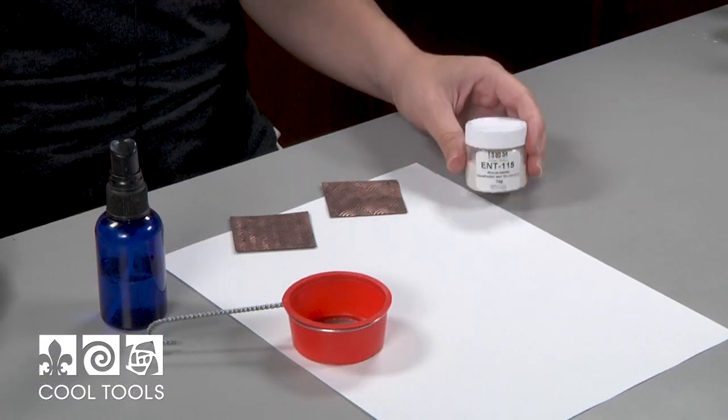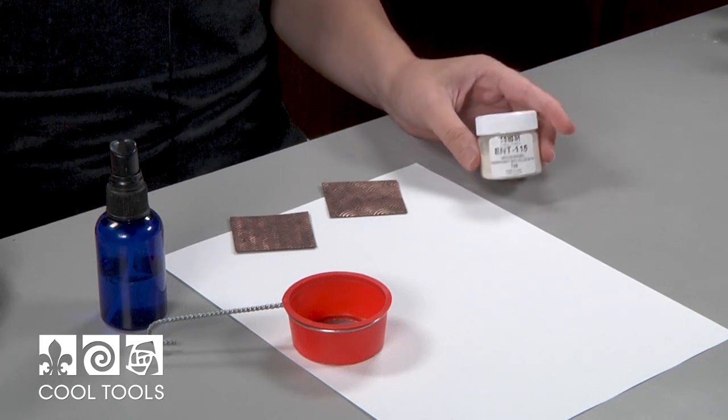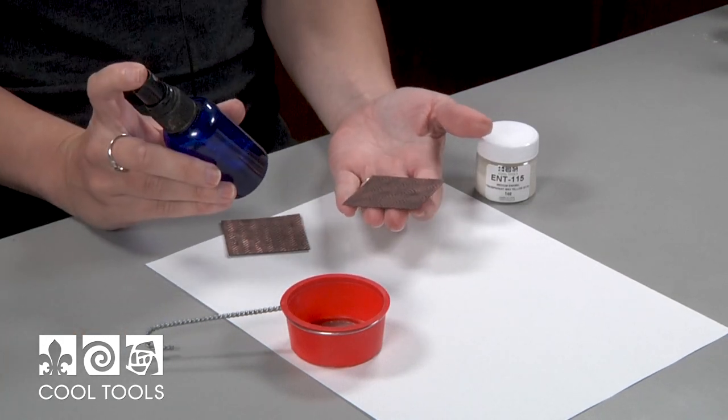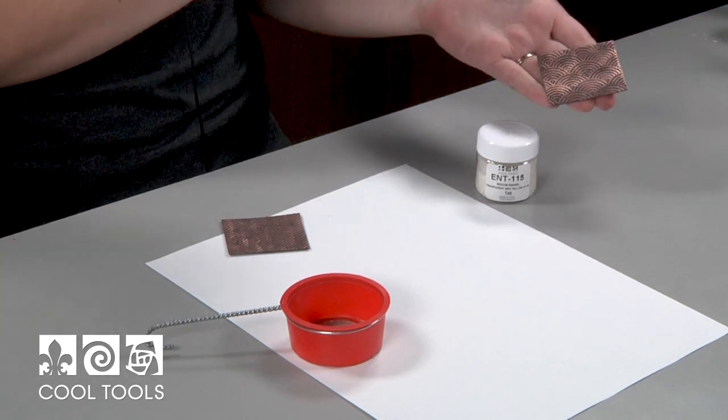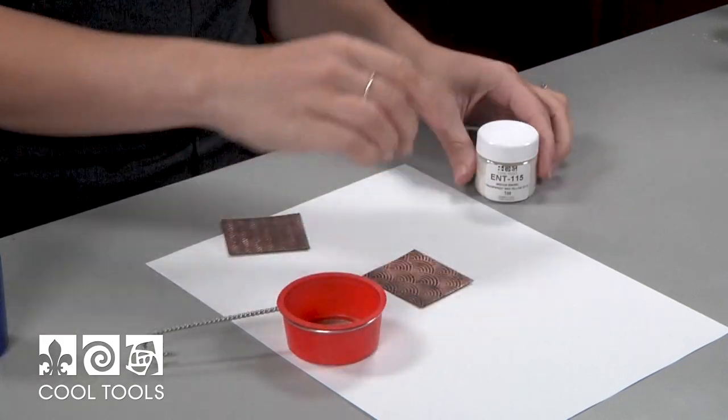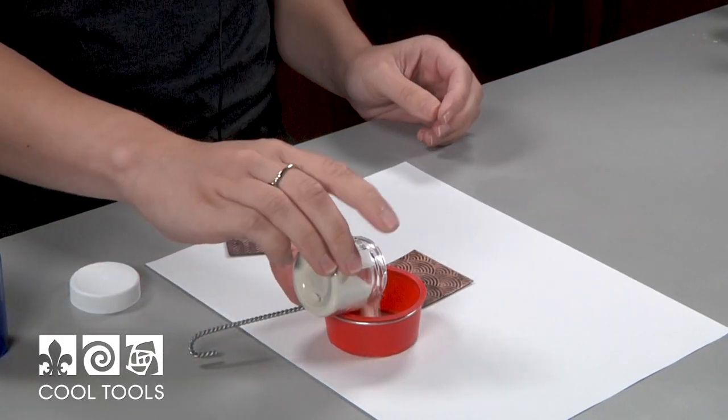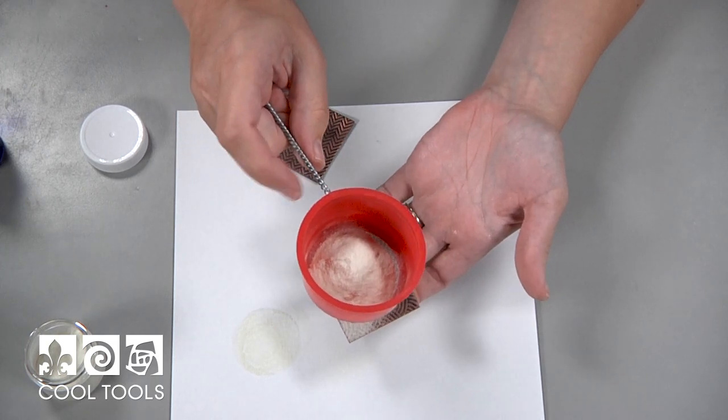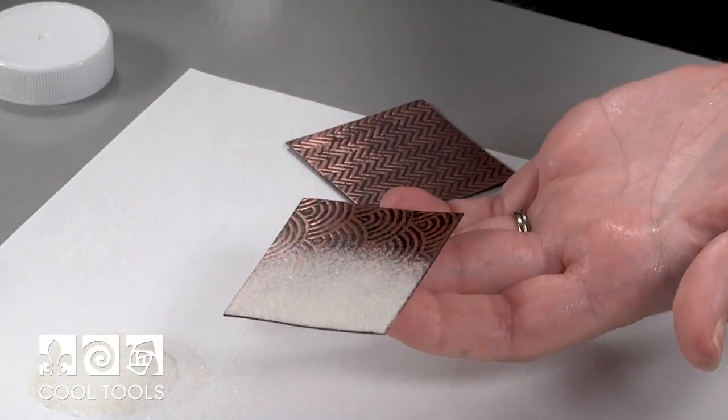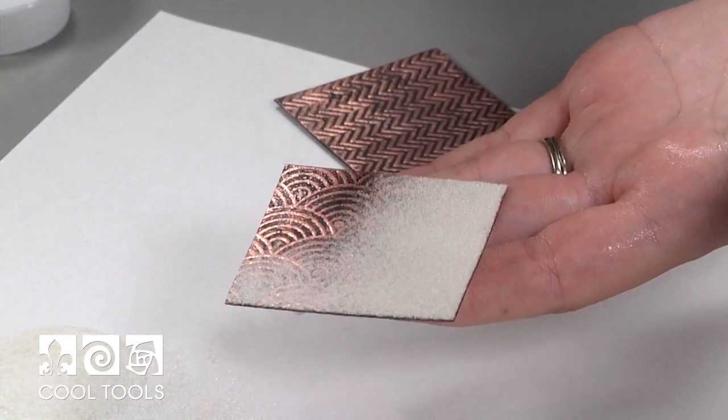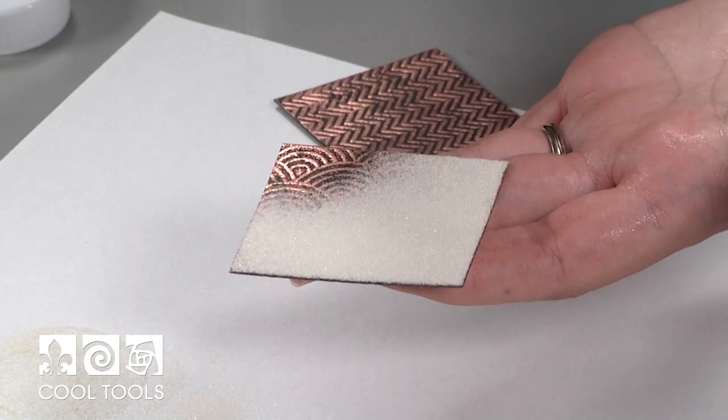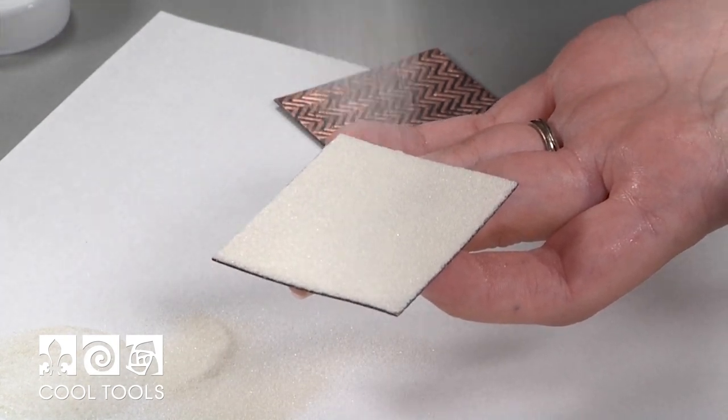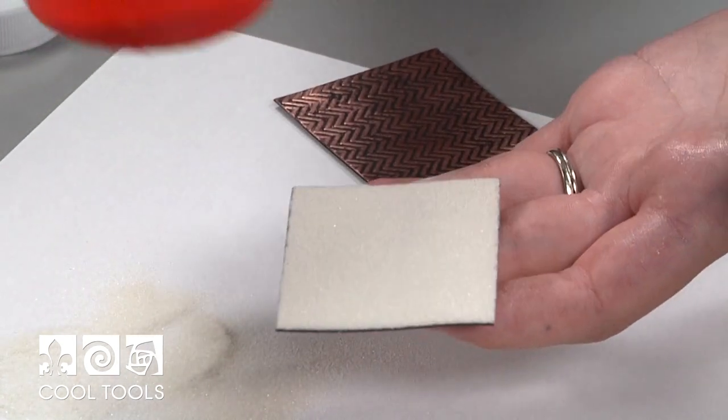So now I'm ready to apply my enamel. I'm going to be working with wax yellow, and I picked that color because it looks really good directly on copper. So I'm going to start off with some clear fire mixed 50-50 with water. And now I'm going to load up my sifter. I'm just going to apply a nice even coat. And you want to apply it thick enough that you can no longer see the pattern underneath the enamel. It's a good indicator that you have a good coat.